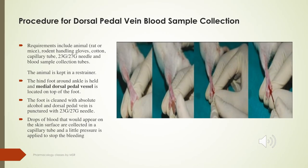The dorsal pedal vein method also does not require anesthesia. Equipment includes gloves, cotton, capillary tubes, and a 23 or 27-gauge needle. The animal is placed in a restrainer, the hind foot is held around the ankle, and the medial dorsal pedal vessel on the top of the foot is located. After cleaning with absolute alcohol and exposing the vein, it is punctured with the needle and blood is collected by syringe or capillary tube. Pressure is applied after sampling to stop bleeding.